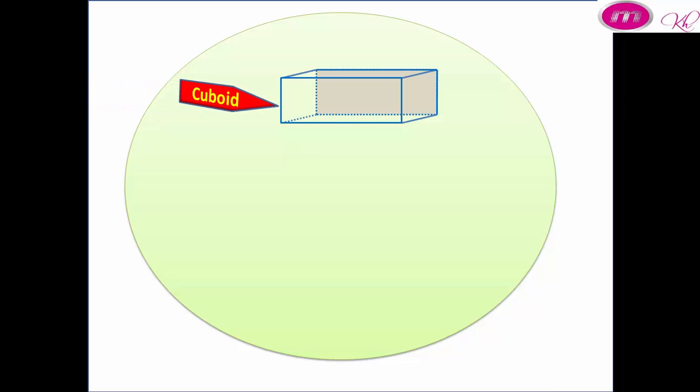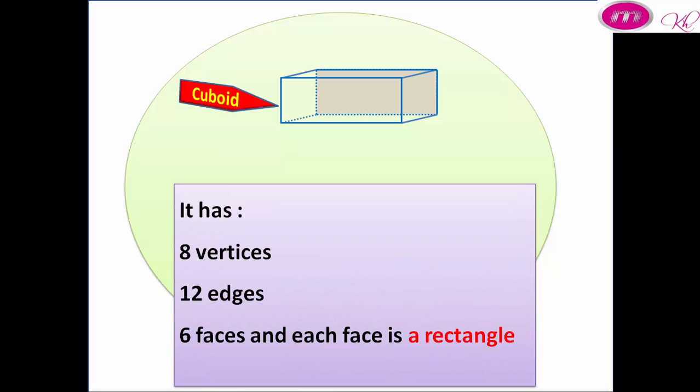A cuboid has 8 vertices, 12 edges, 6 faces, and each face is a rectangle.